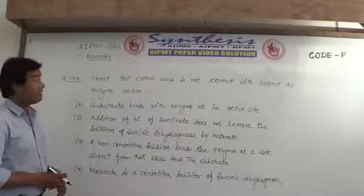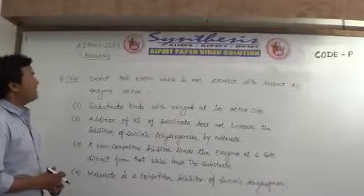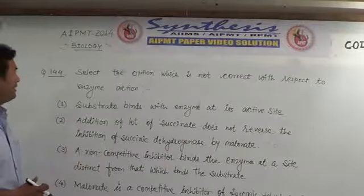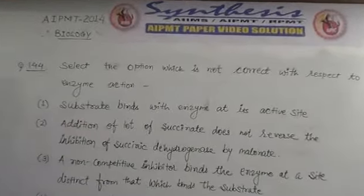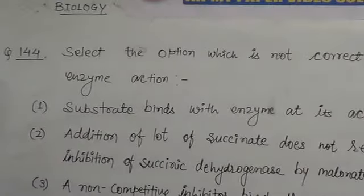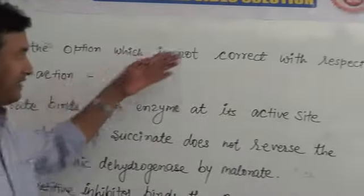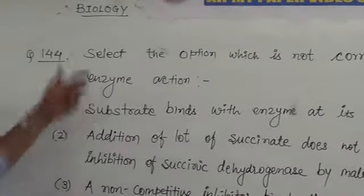April 2014, we have a biology paper. Question number 144: Select the option which is not correct with respect to enzyme action.